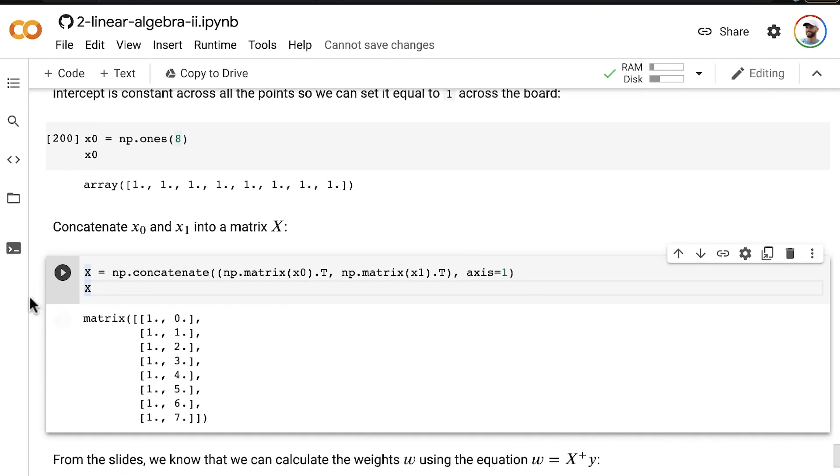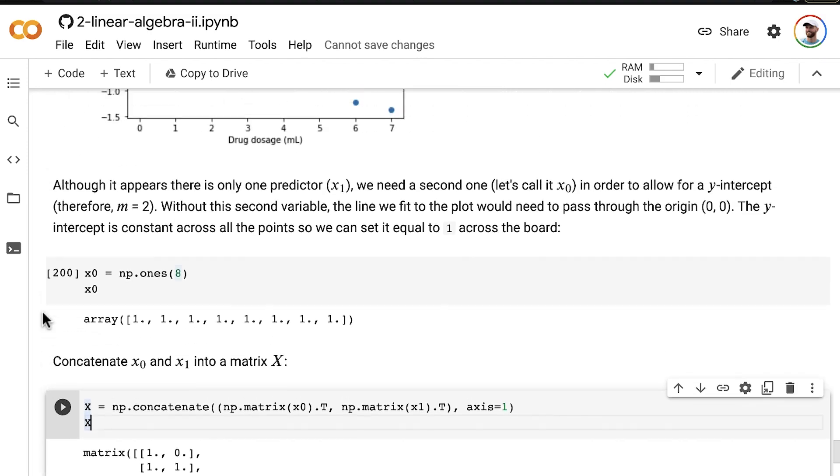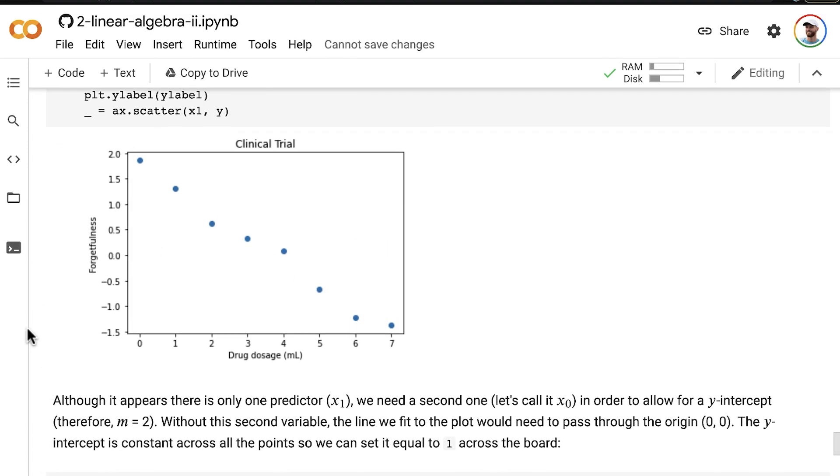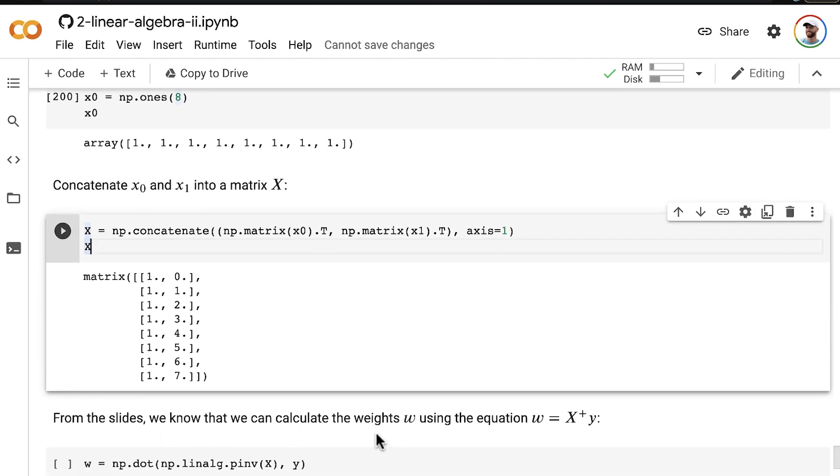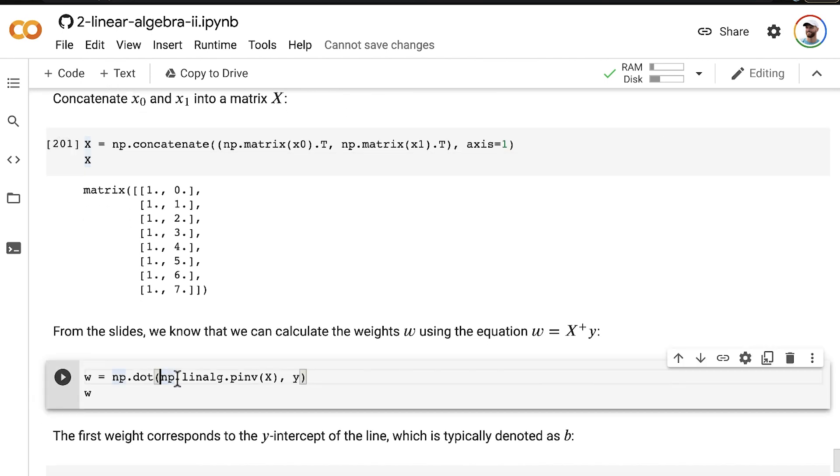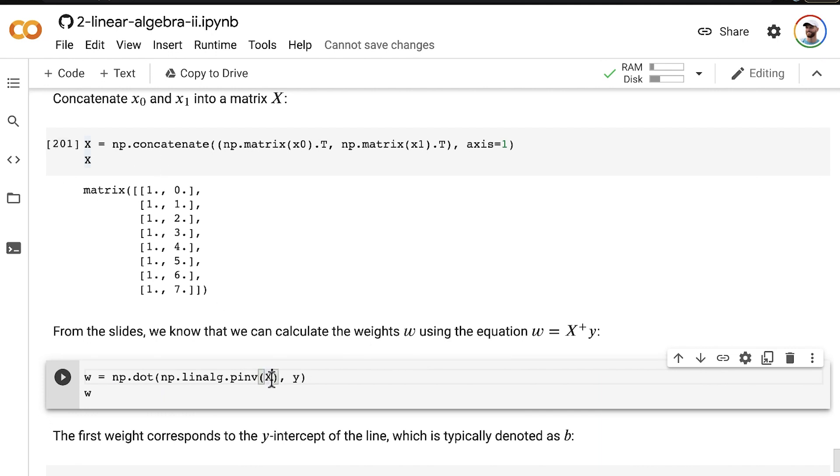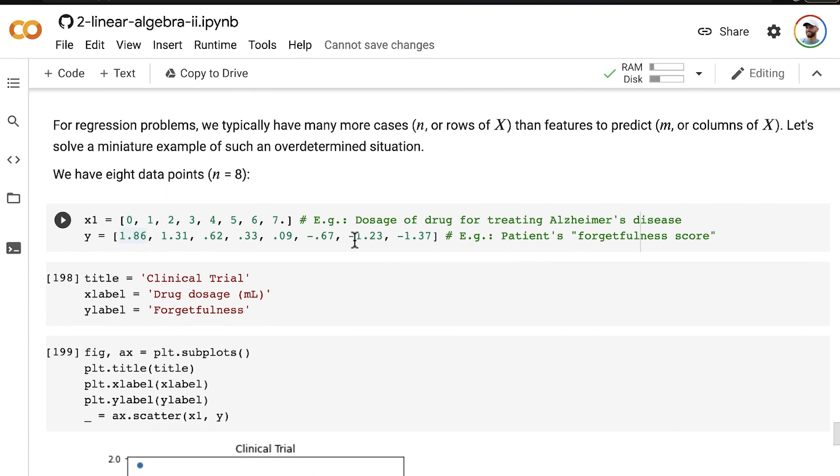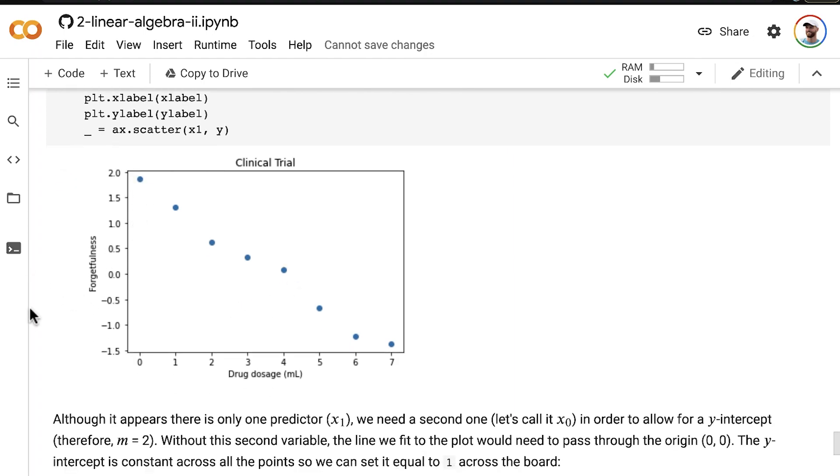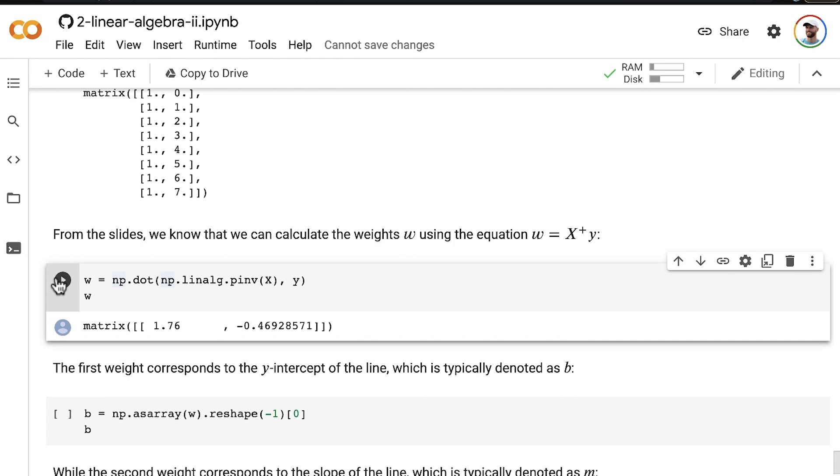Armed with our matrix X, we now have everything we need to start solving for the weights, the weights that will allow us to fit a line to these points. From the slides, we know that we can calculate the weights using the equation where our weights are equal to the pseudoinverse of X multiplied by Y. We just throw our matrix X here into the numpy pseudoinverse method, and we perform matrix multiplication between that pseudoinverse and our vector Y, which contains all of the outcomes, the patient's forgetfulness score, the y-axis values. There you go. These are our weights. That's it. It's that easy.